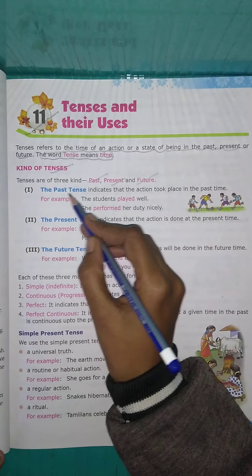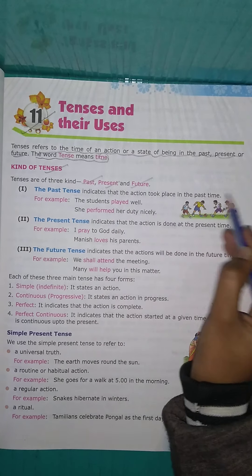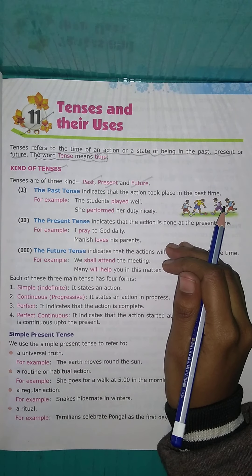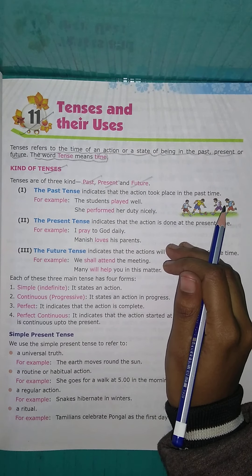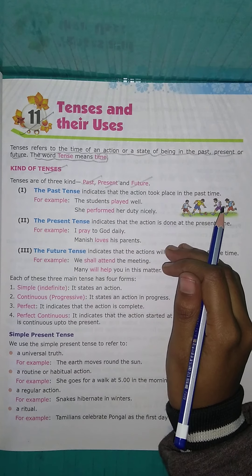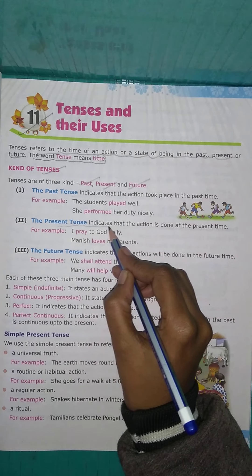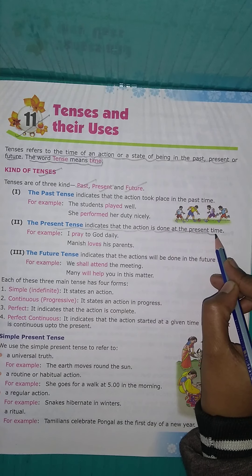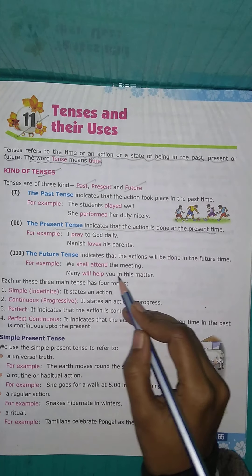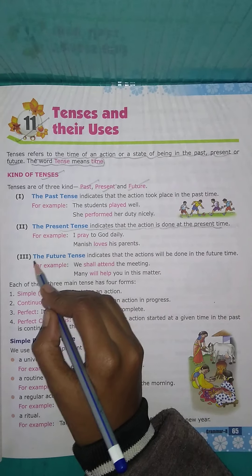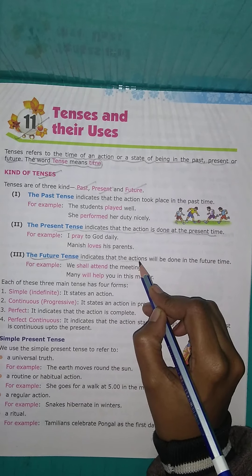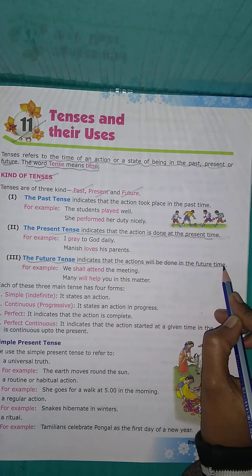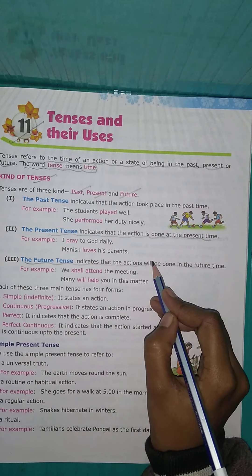The past tense indicates that an action took place in the past. The present tense indicates that an action is happening at the present time. The future tense indicates that the action will be done in the future time.